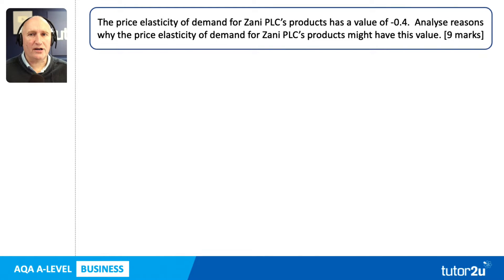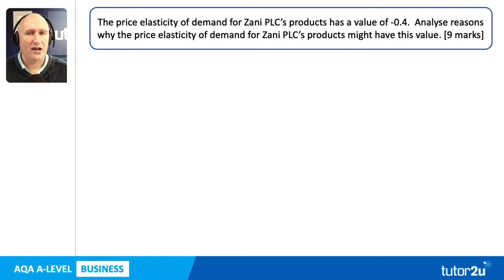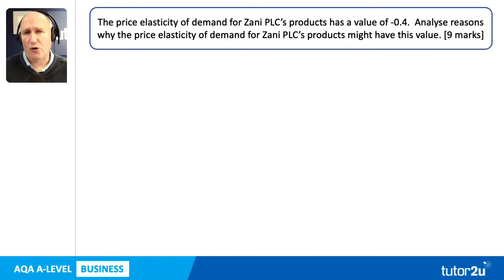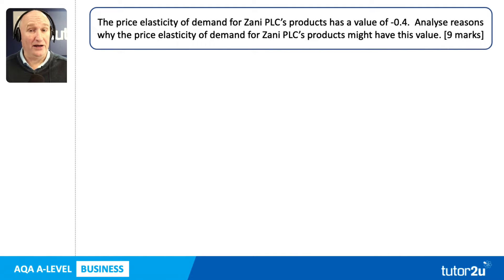Hi there. We're back taking a look at another past question. This one's a paper two question for AQA A-level business — a nine mark question on a case of the business called Zani. So let's take a look at the question. The price elasticity of demand for Zani PLC's products has a value of minus 0.4. Analyze reasons why the price elasticity of demand for Zani PLC's products might have this value, minus 0.4.